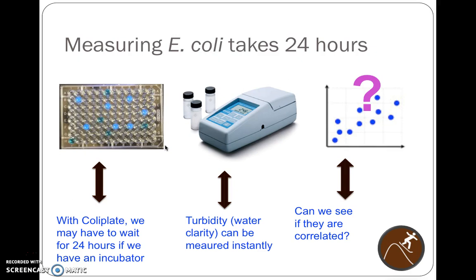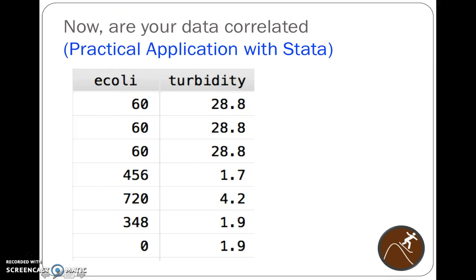If you want to compare — remember our previous method comparing E. coli versus other methods — maybe you want to see whether or not something rapid like measuring turbidity, the water clarity, can serve as a proxy. You can measure water clarity instantly. But if you're in the village, in the field, or in the military, you may not have 24 to 48 hours to wait for an incubator. So we want to know: can we predict water quality more quickly using turbidity? We have data from our Canyon water study — over 800 samples — with E. coli values and turbidity values.